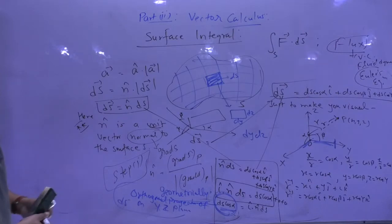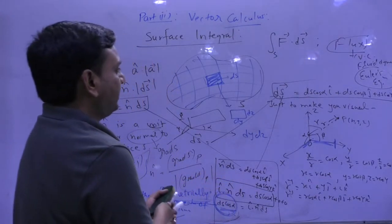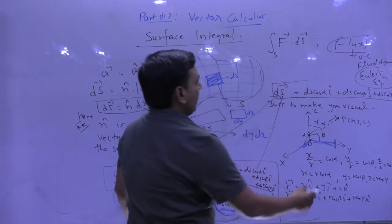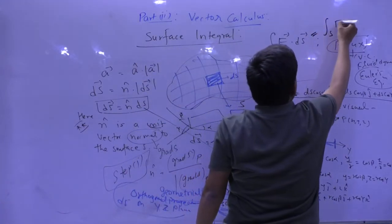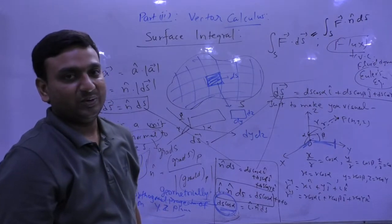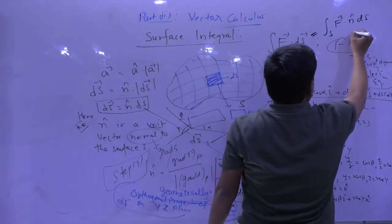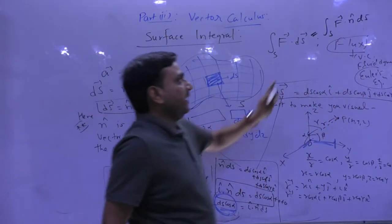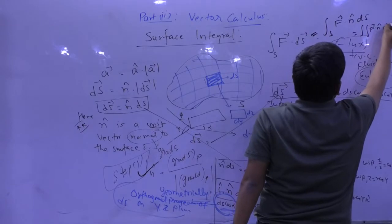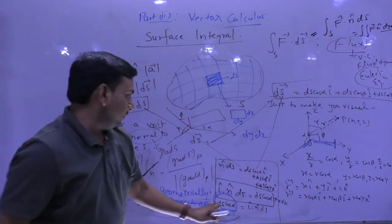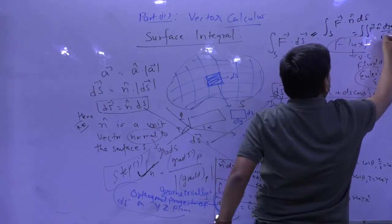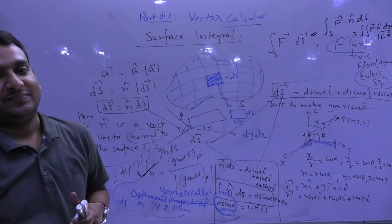To calculate the surface integral of f vector dot ds vector, I will change this to the surface integral of f vector dot n̂ ds. And ds will be represented by, for example, dy dz divided by |î · n̂|. If I am doing dy dz, I multiply by î cap. So this will be — remember — i cap dot n cap in the denominator's modulus.